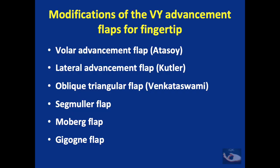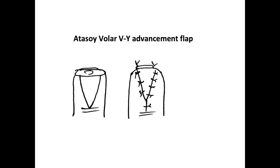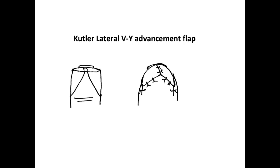One of the applications for VY advancement flaps is fingertip injuries, and there are many modifications of this flap for fingertip injuries. The Atasoy Volar VY advancement flap is ideally indicated for dorsal oblique amputations of the fingertip, giving a very good contour and sensate skin on the tip. The Cutler lateral VY advancement flap is ideally indicated for transverse amputations, and both are described in detail in separate videos.